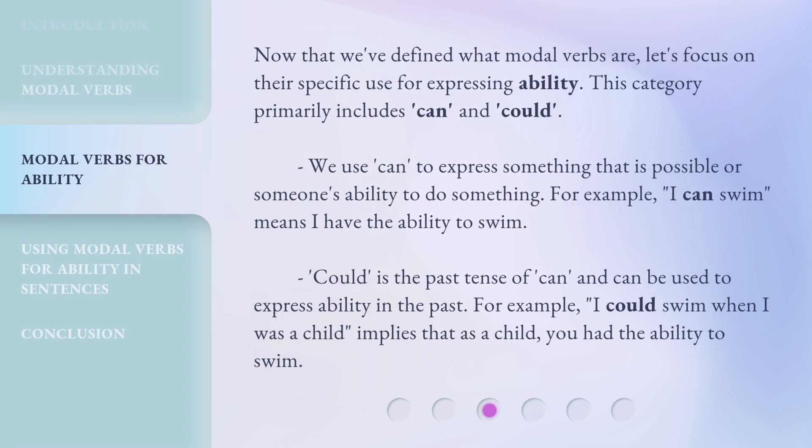Now that we've defined what modal verbs are, let's focus on their specific use for expressing ability. This category primarily includes 'can' and 'could.' We use 'can' to express something that is possible or someone's ability to do something. For example, 'I can swim' means I have the ability to swim. 'Could' is the past tense of 'can' and can be used to express ability in the past. For example, 'I could swim when I was a child' implies that as a child, you had the ability to swim.